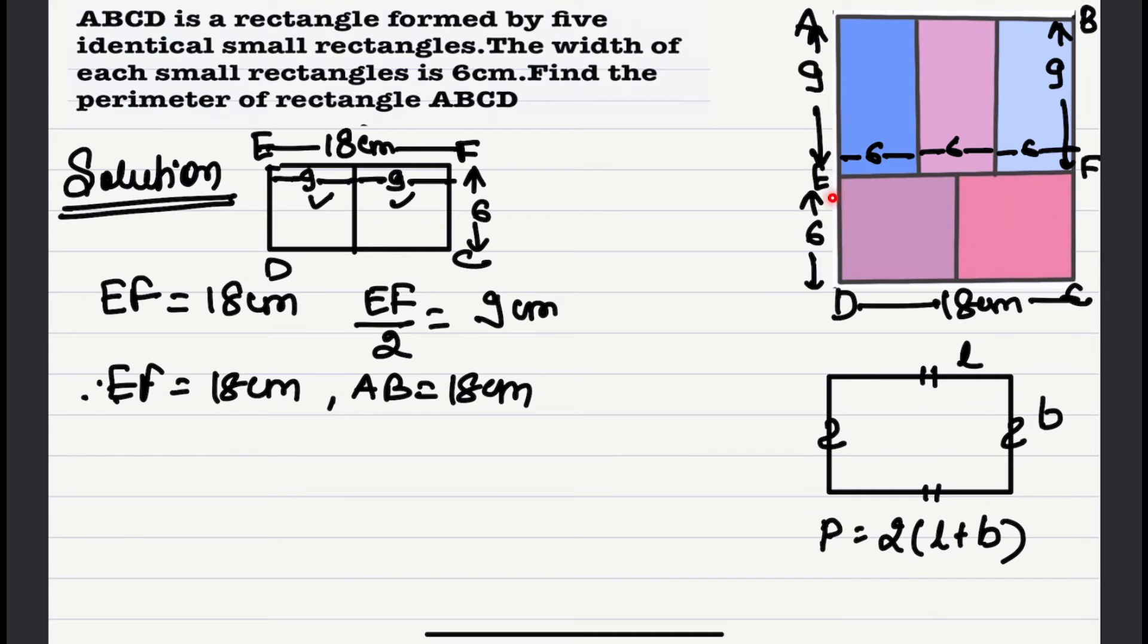Now this is nine and this is six. So AD will become 15 centimeters. So as we have to calculate the perimeter, that is the length of the boundary.